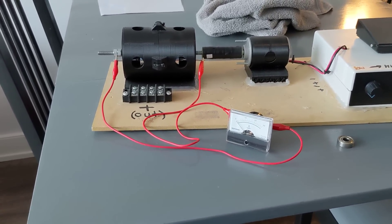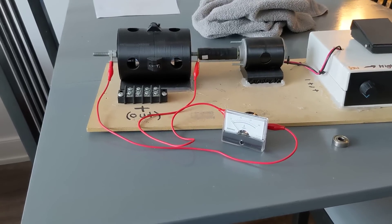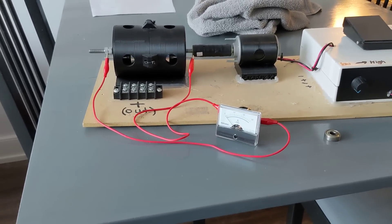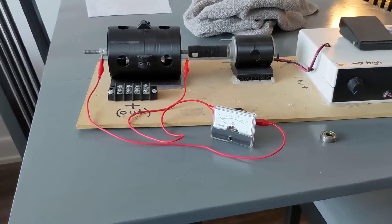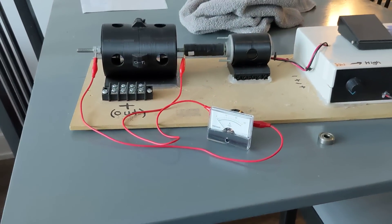Now, you've got to understand, Bruce De Palma's machine weighed almost 1,000 pounds. His was very large. So he was making about 63 volts at about 2,500 amps. So we're talking a way big difference in scale here.